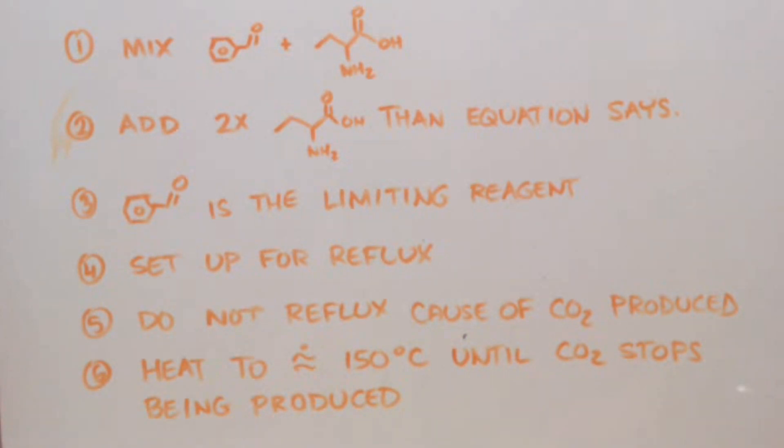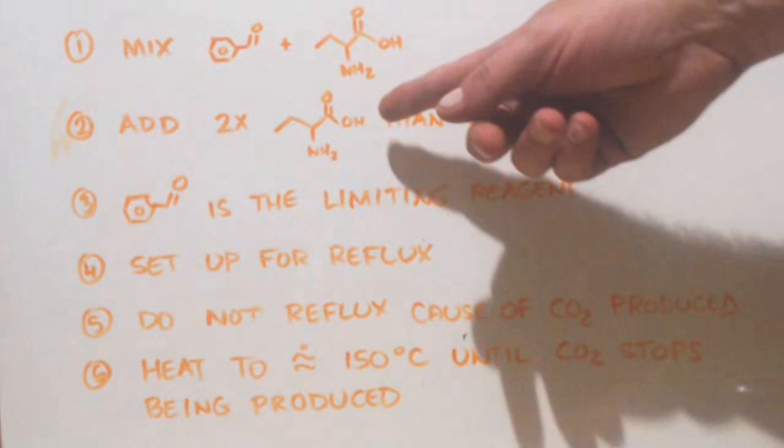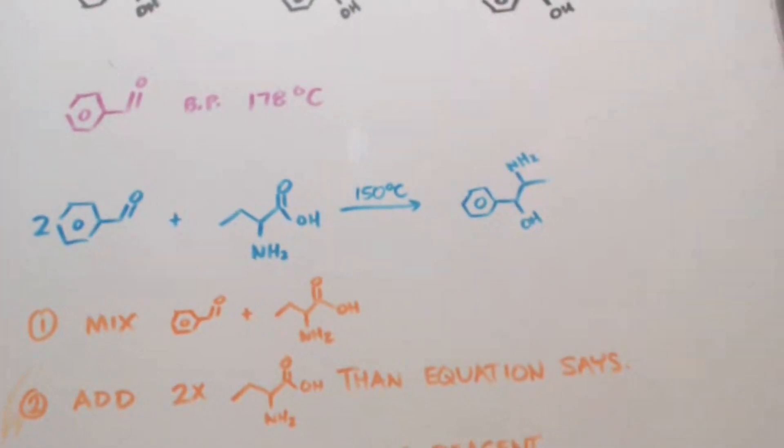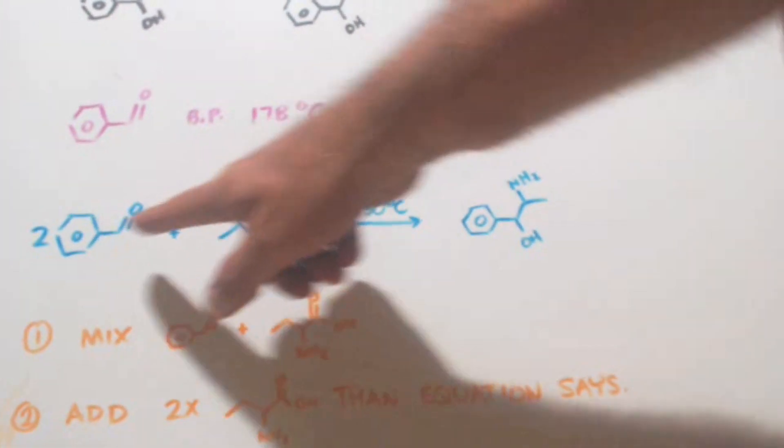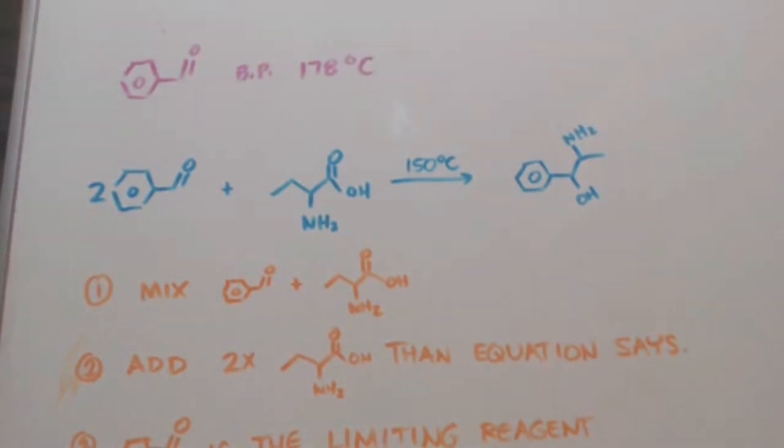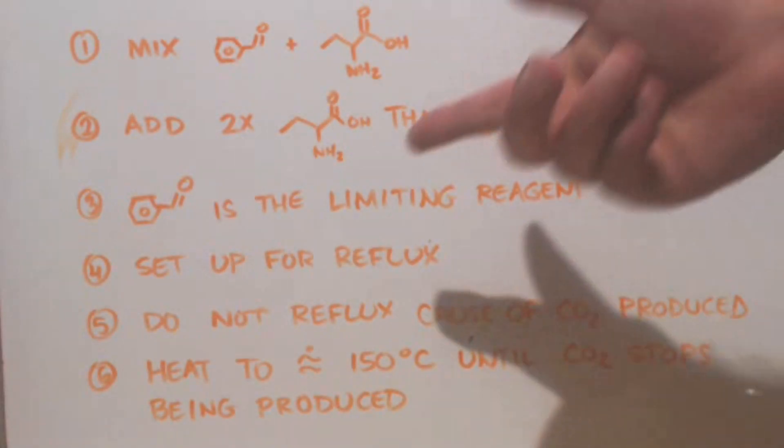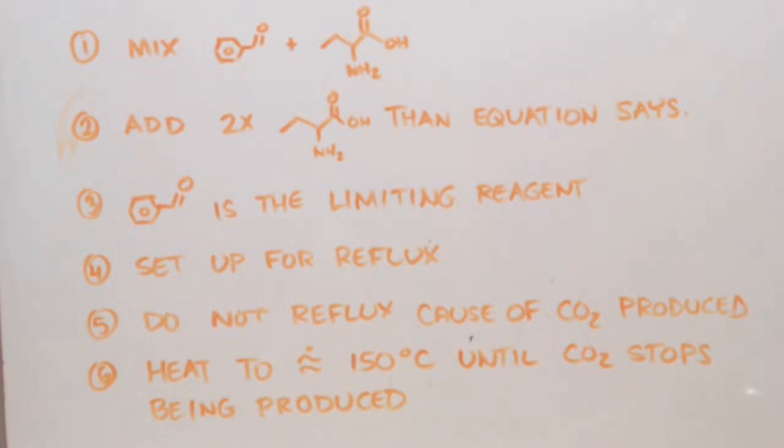You got to add in twice as much alanine. So I would add in equal molar amounts of benzaldehyde and alanine. Which, as you can see, instead of two to one you'd have a two to two ratio, which is a one to one ratio. So you have your two things mixed, the benzaldehyde will be the limiting reagent since you're adding in so much excess of the alanine.